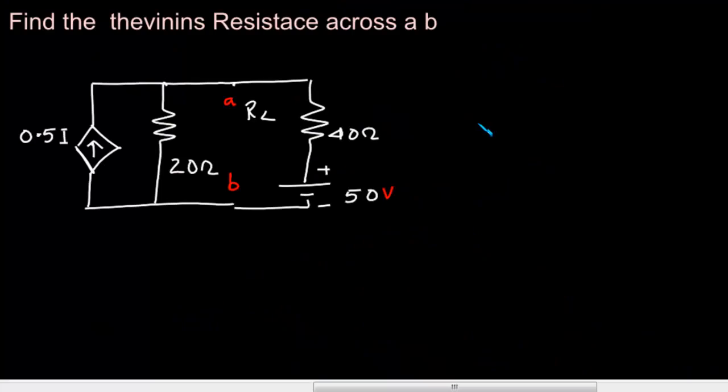We are asked to find out what is Thevenin's resistance across these two terminals, that is A and B. We have two approaches.